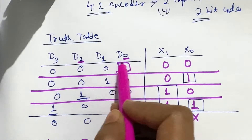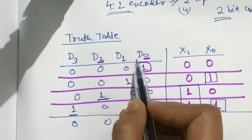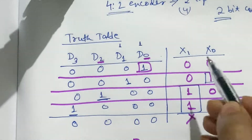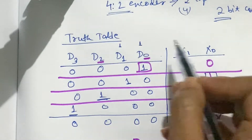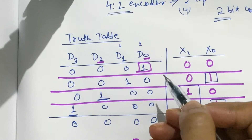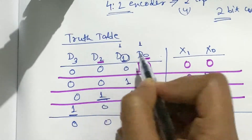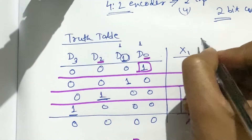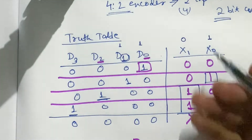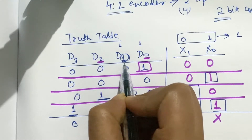Suppose d1 and d0 both got high — both have the value 1 at the same time. Then what will be the output? In such a situation, we decide which input has the highest value. So in this case, d1 and d0 are both high, but 1 is greater than 0, so at the output we will get x1 equal to 0 and x0 equal to 1, which is the binary code for 1.